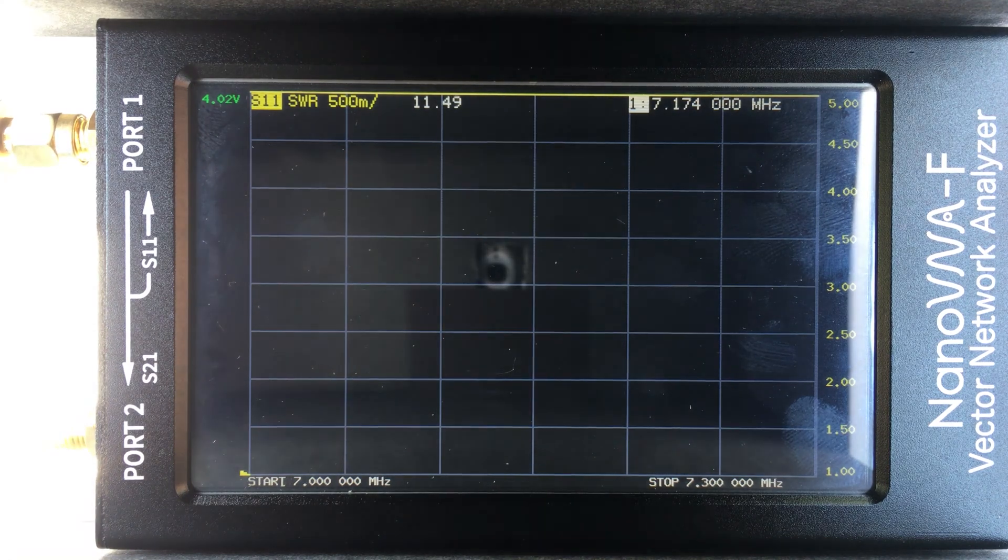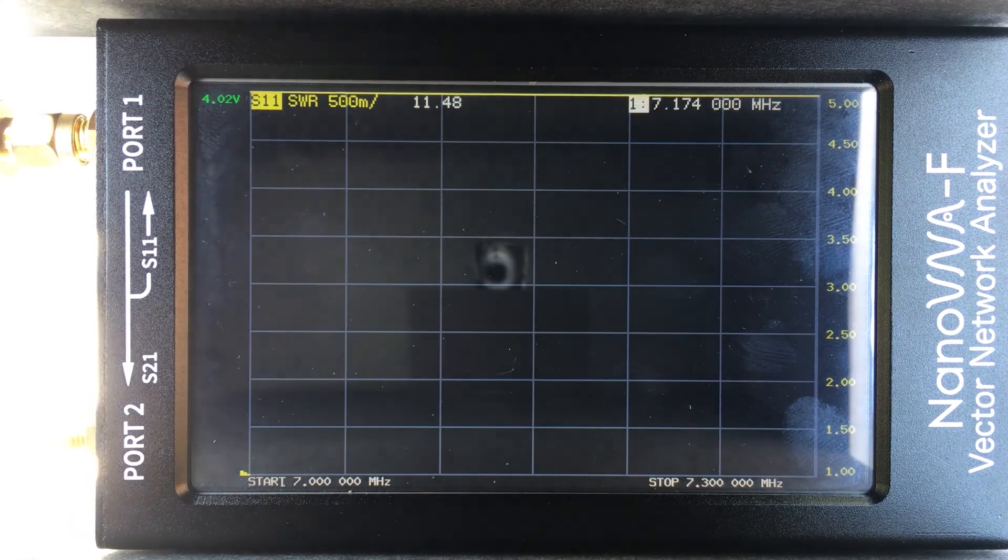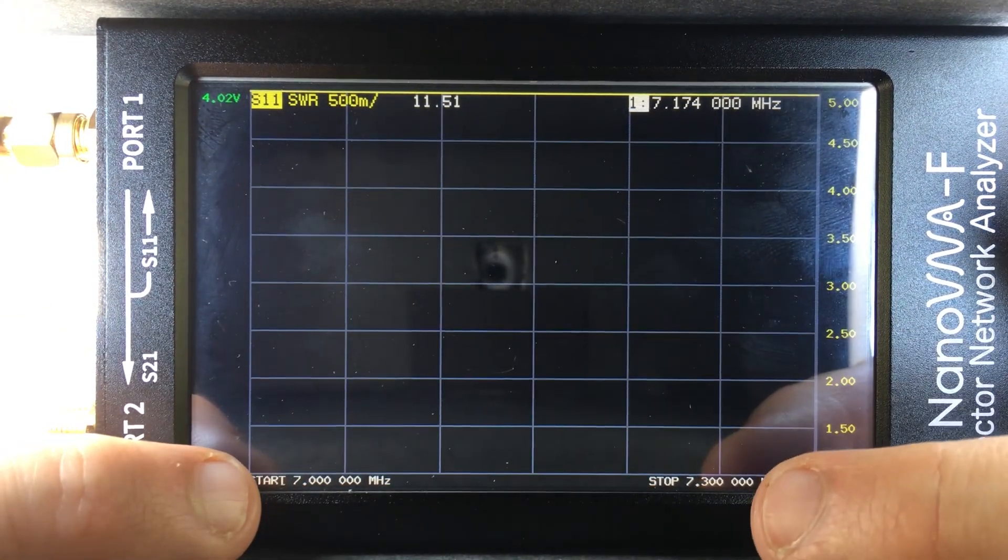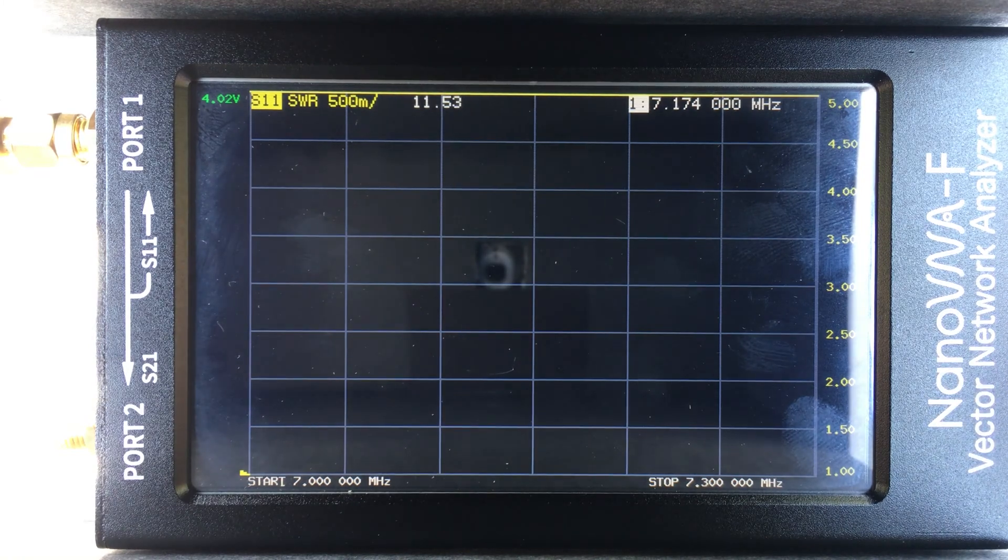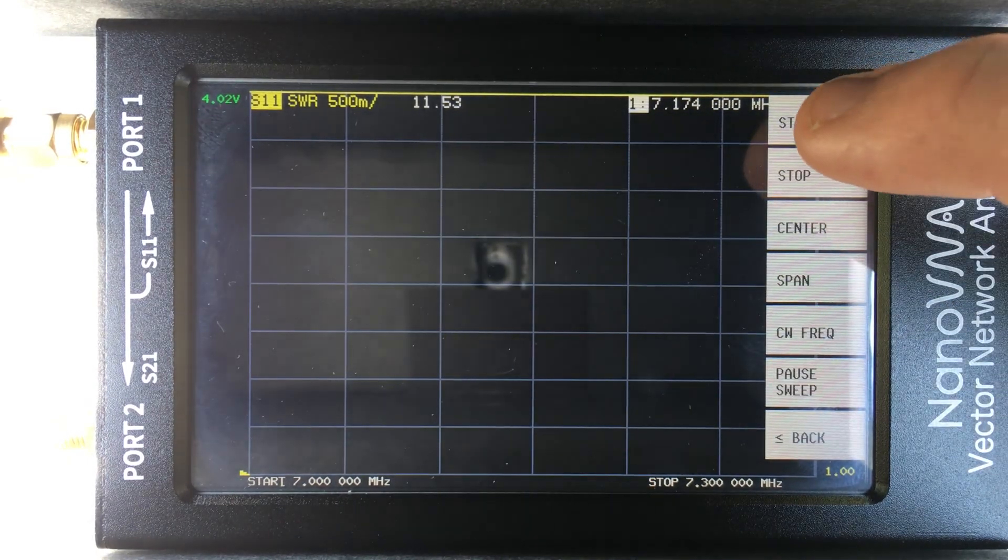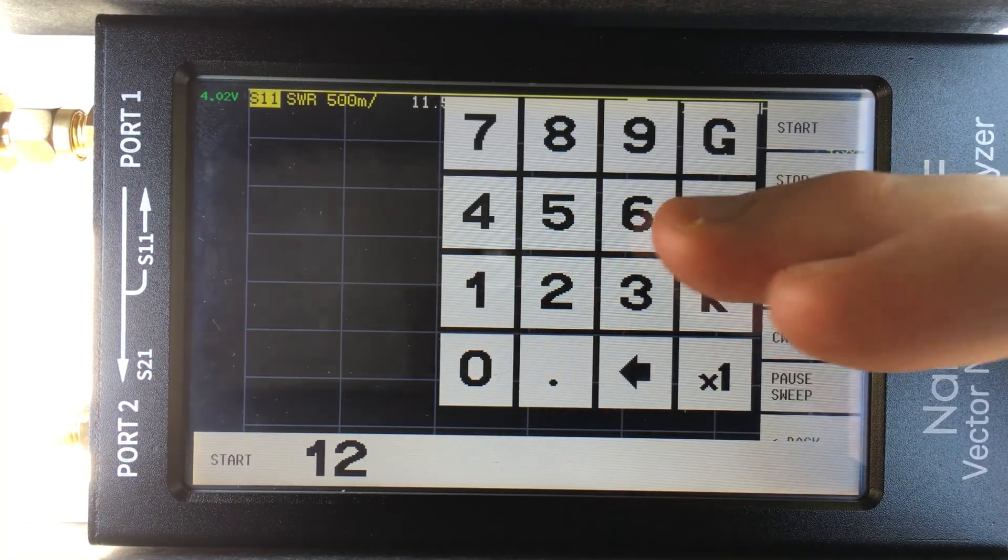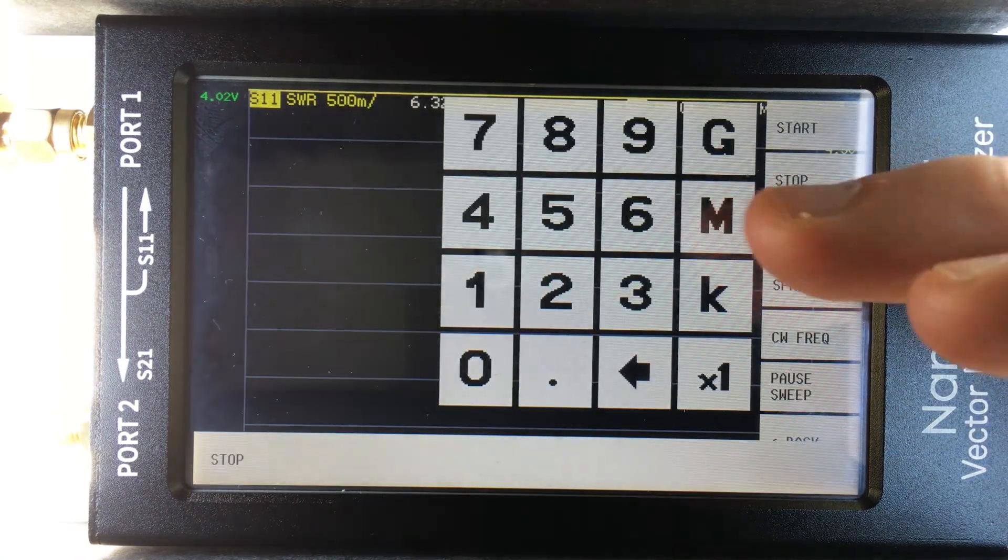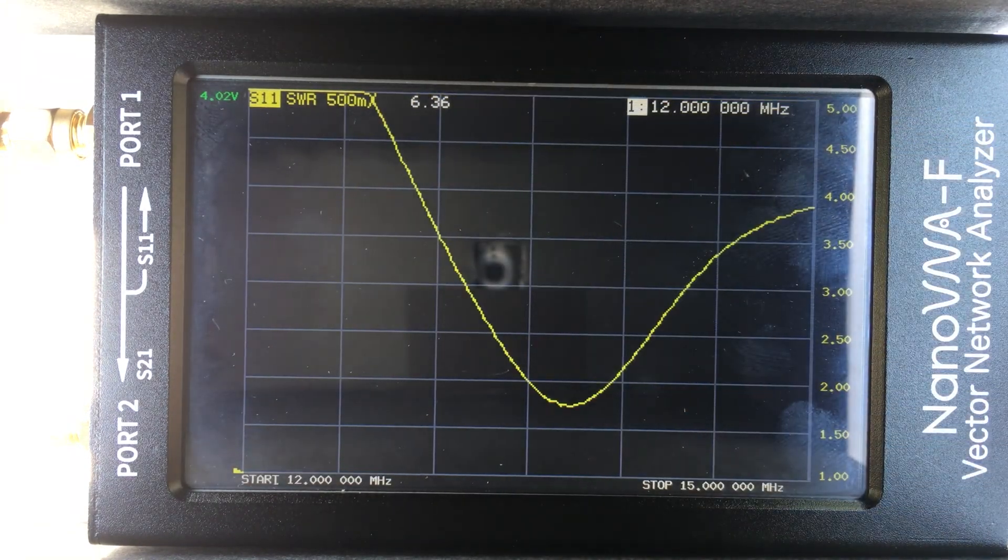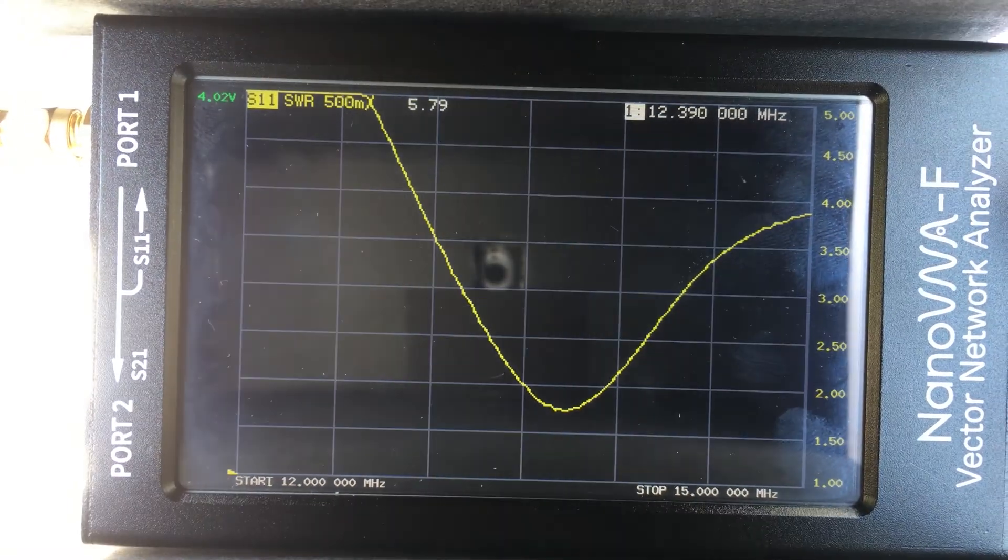All right. So I've plugged in my 20 meter antenna and I'm not really sure where it's resonant exactly because I've never used this one before, but we can find out pretty easily. So right now you can see that my span is still set to from 7 megahertz to 7.3. So it's not going to really show me anything for 20 meters at 14 megahertz. So we're going to change this. So I'm going to click on the screen. I'm going to go to my start. We'll start with 12 megahertz. And then I'm going to do a stop of 15 megahertz. And there we go. We've got a dip and that's what we were looking for.